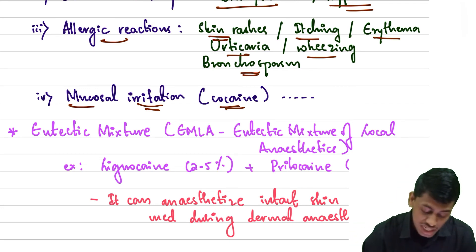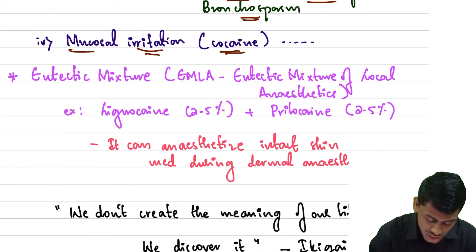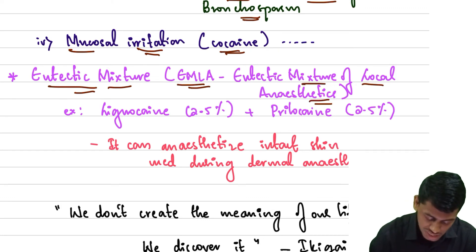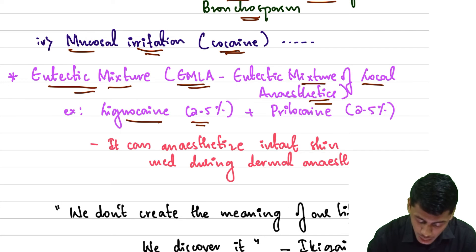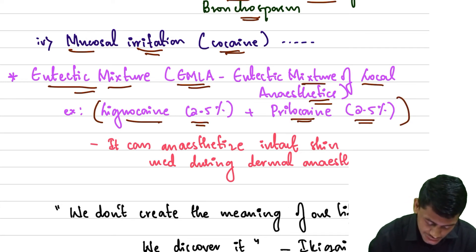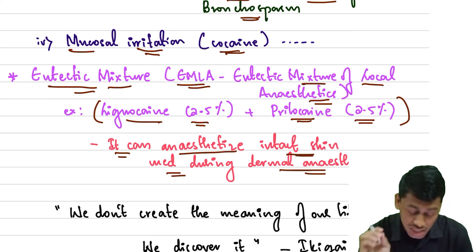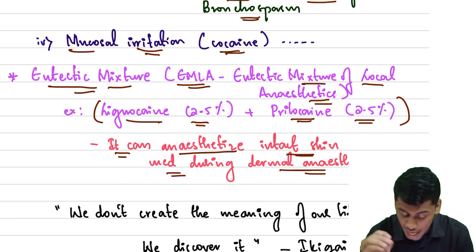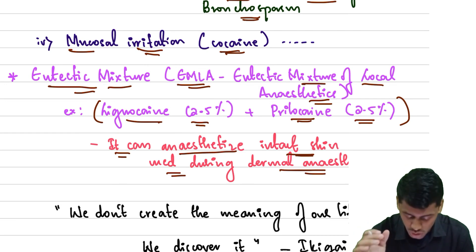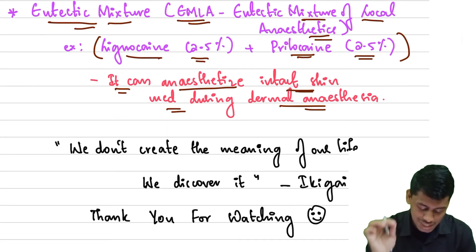Another important topic is the eutectic mixture of local anesthetics, also known as EMLA. An example is lignocaine 2.5% plus prilocaine 2.5%. This combination can anesthetize intact skin and is used in dermal anesthesia.